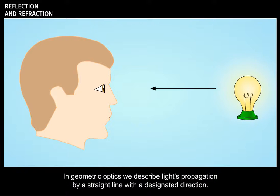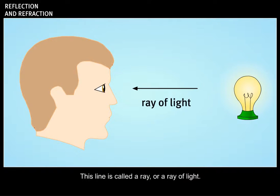In geometric optics, we describe light's propagation by a straight line with a designated direction. This line is called a ray, or a ray of light.